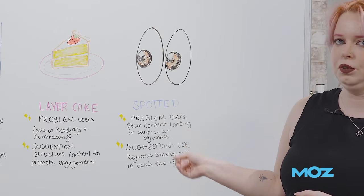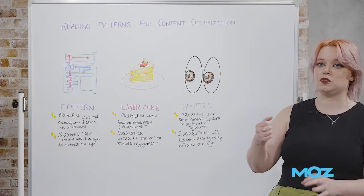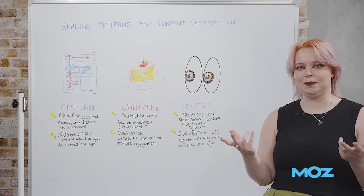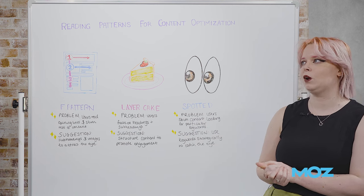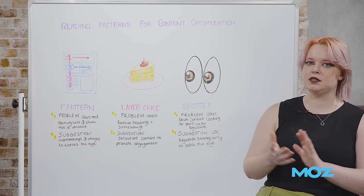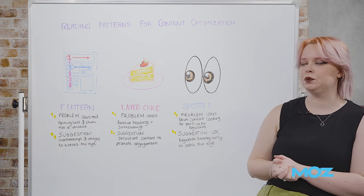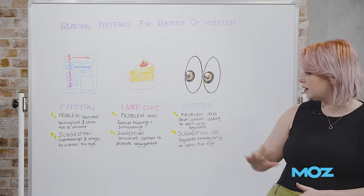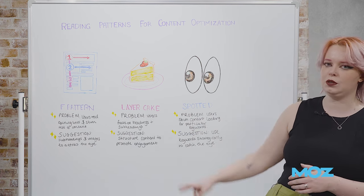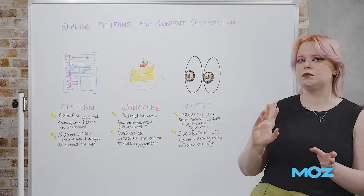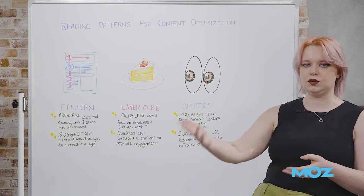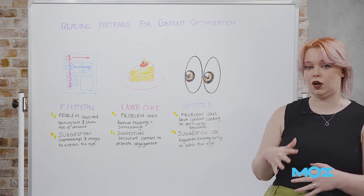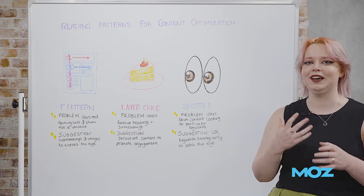And then finally, we've got spotted, which sums me up as a user more than any other reading pattern. This is where your users are just skimming the content looking for a specific keyword or phrase — a chocolate cake recipe is the best example, where users are literally just looking for a subheading that says here's the recipe, scrolling through any preamble to get straight to that. The best way to approach this is using your keywords in strategic places — your headings and subheadings for layer cake and F-pattern users, but also things like anchor text, using that to promote not just your internal linking structure, which is a ranking factor, but also encouraging users to spend a longer time on your site understanding what you have to offer.